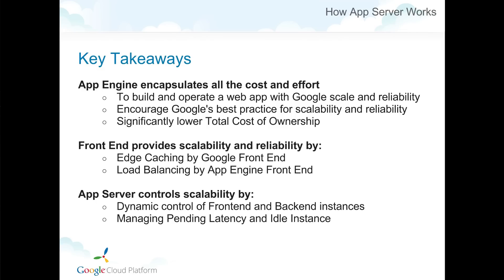Key takeaways: App Engine encapsulates all the costs and effort to build scalable and available applications on its cluster. It's not just a hosting platform — it's a platform that encourages users to design systems using Google's best practices for scalability and reliability. The front end provides edge caching and load balancing, which are very important technologies to utilize. The app server controls the scalability of front-end and back-end instances, and pending latency and idle instances are key parameters for controlling that behavior.